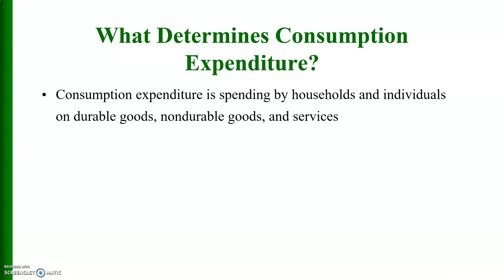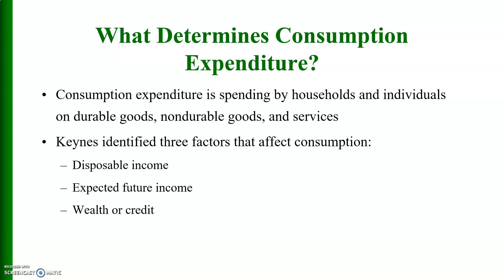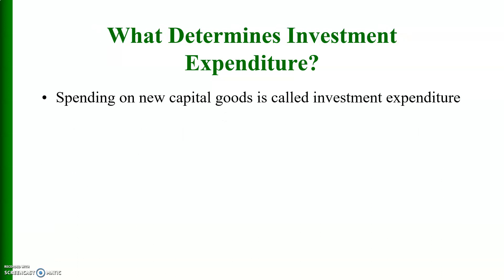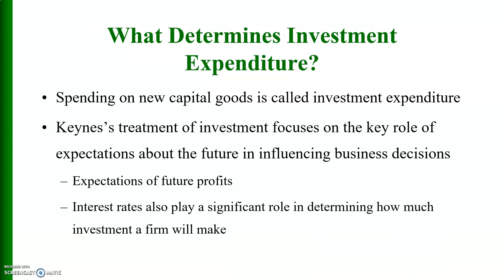Consumption expenditure is spending by households and individuals on durable goods, non-durable goods, and services. Keynes identified three factors that affect consumption: disposable income, expected future income, and wealth or credit. Spending on new capital goods is called investment expenditure or business expenditure. Keynes' treatment of investment focuses on the key role of expectations about the future in influencing business decisions, including expectations of future profits.